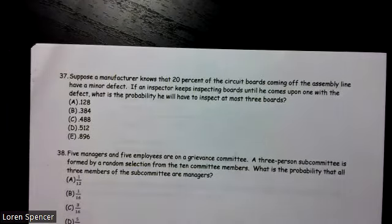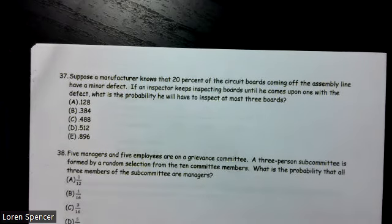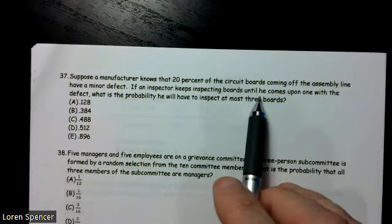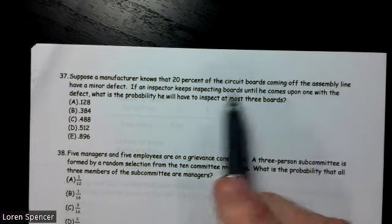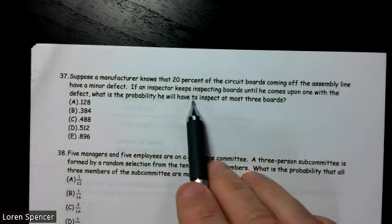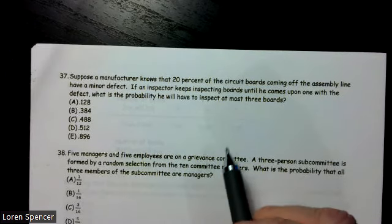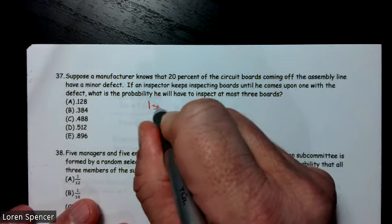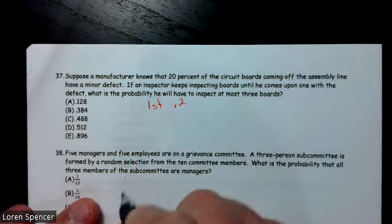Suppose a manufacturer knows that 20% of the circuit boards coming off the assembly line have a minor defect. If an inspector keeps inspecting boards until he comes upon one with a defect, what's the probability you have to inspect at most three? Well, what's the probability that the first one is defective? The probability the first one is defective is 0.2.